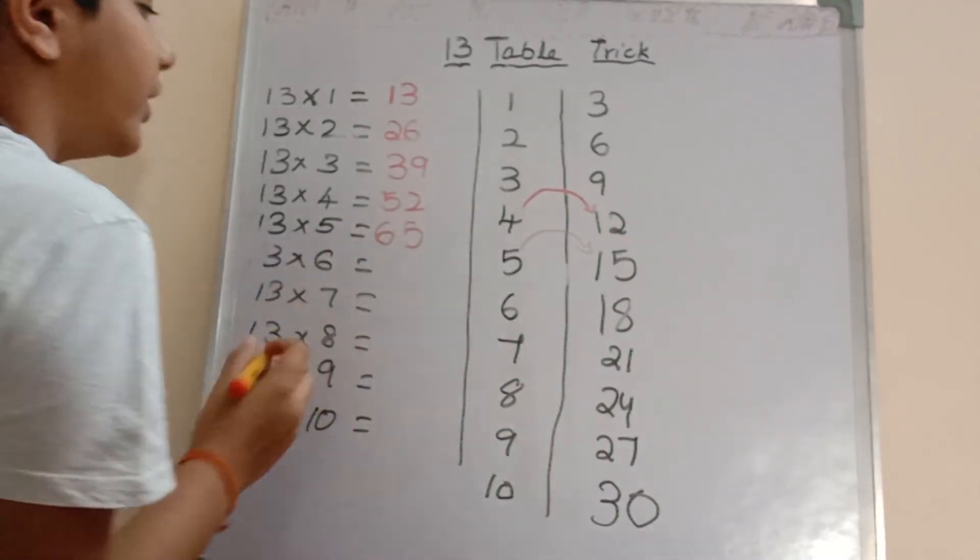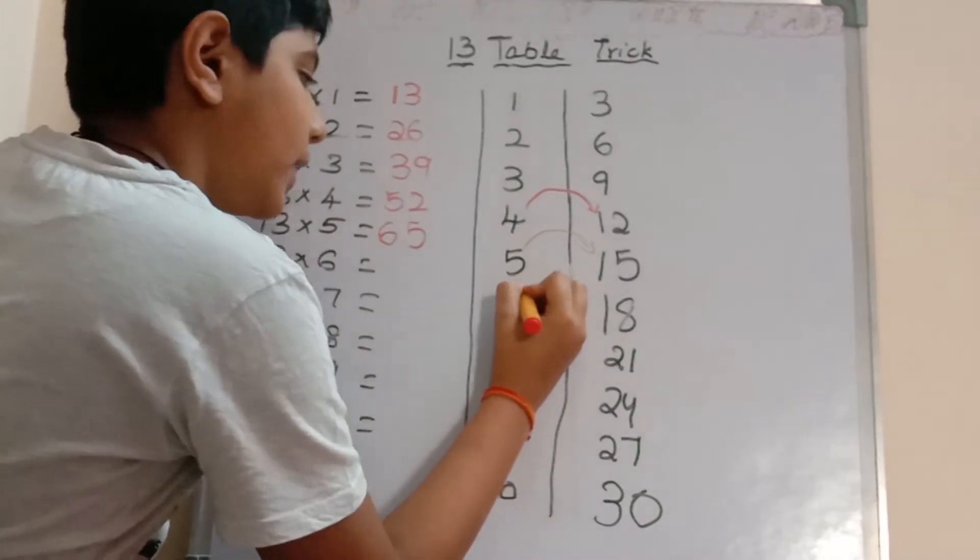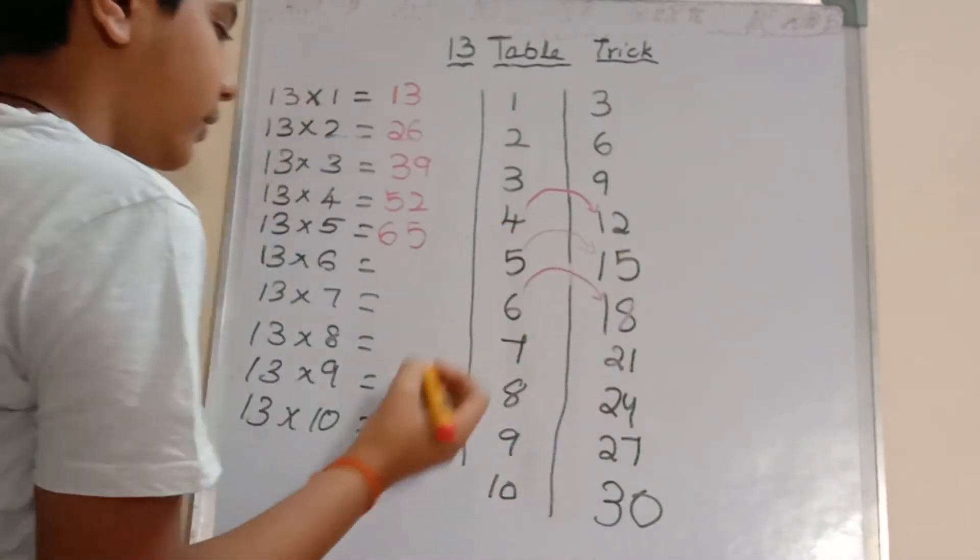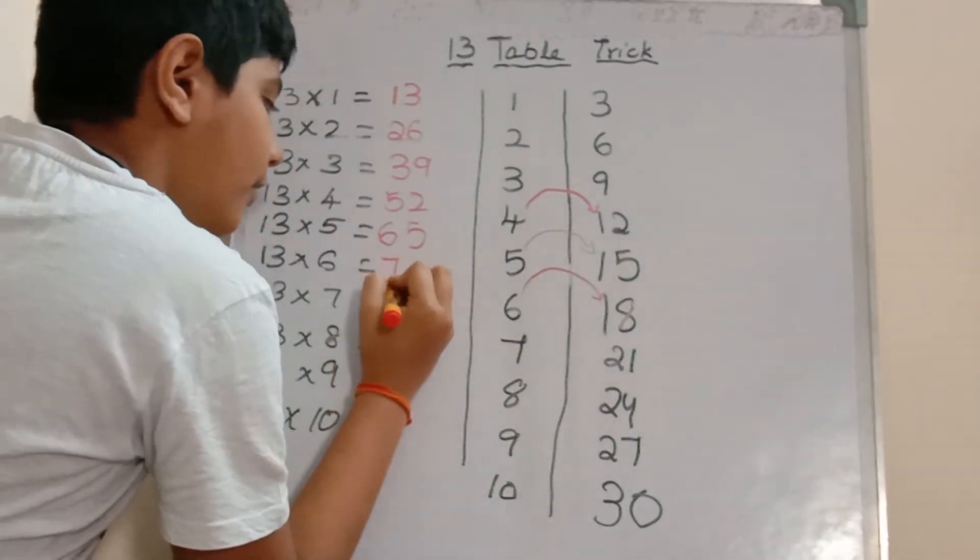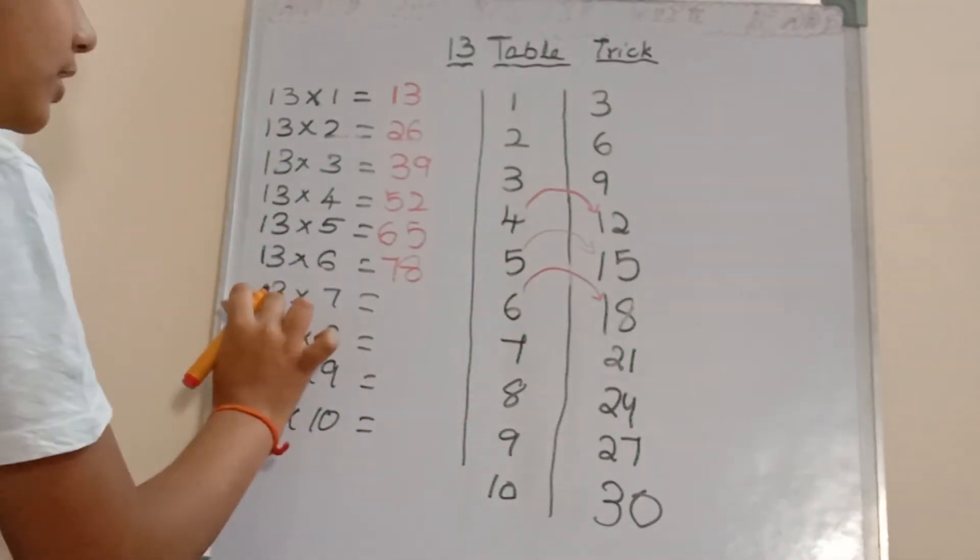13 into 6: 6 plus 1, now 6 plus 1 is 7, so 78. 13 into 7.